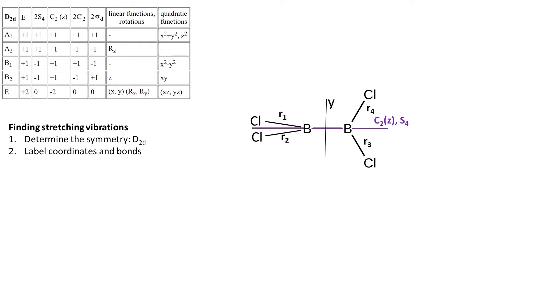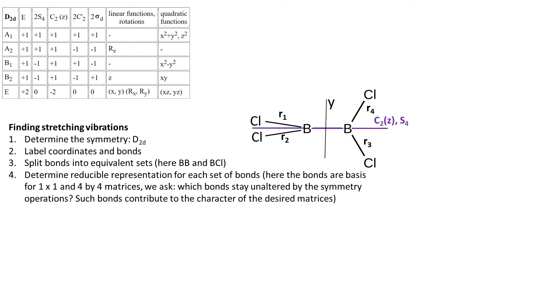Now let's label the bonds and notice that we have two different sets of bonds, BB and BCl. Now let's determine reducible representation for each set of bonds. Please remember that only the bonds that are not moved by the symmetry operations contribute the characters of matrices that we are interested in.